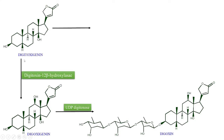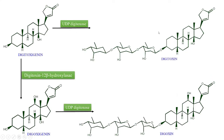On the other hand, with digitoxigenin, there is also incorporation of digitoxose sugar with the help of UDP-digitoxose. Here also, three digitoxose sugars are attached by a beta-1,4 configuration — you can see positions 1, 2, 3, and 4 — so there is 1,4-addition of digitoxose sugar, and in this way digitoxin is formed in plants.